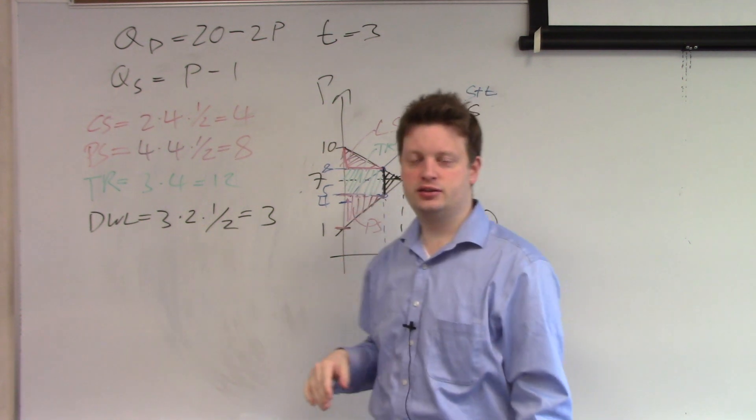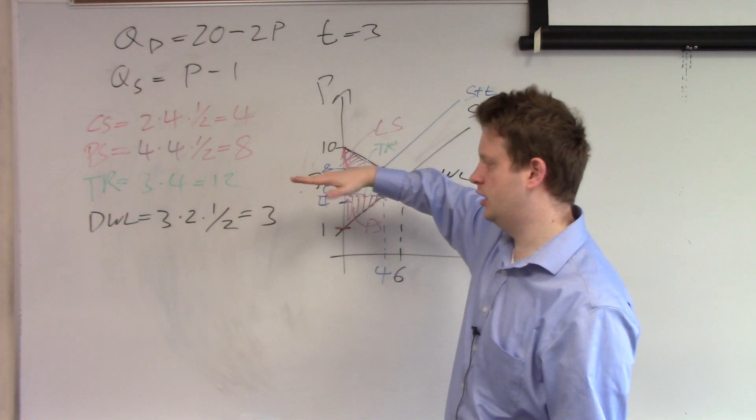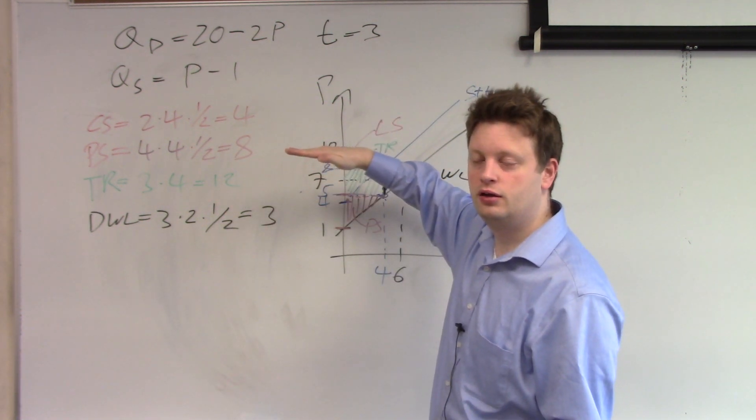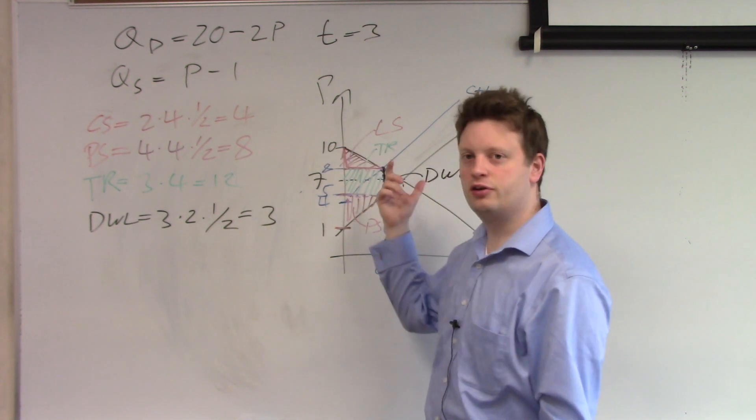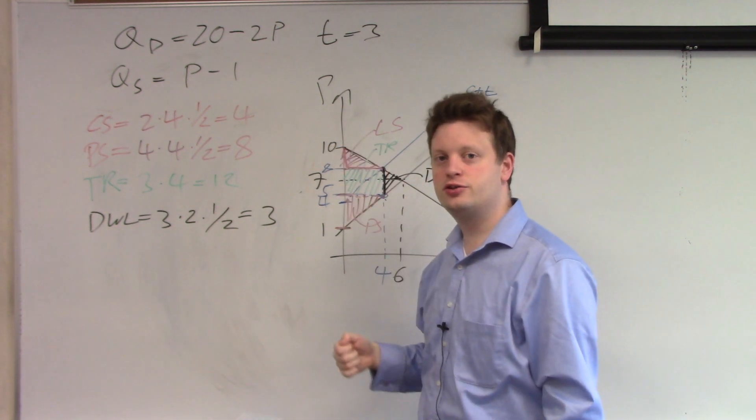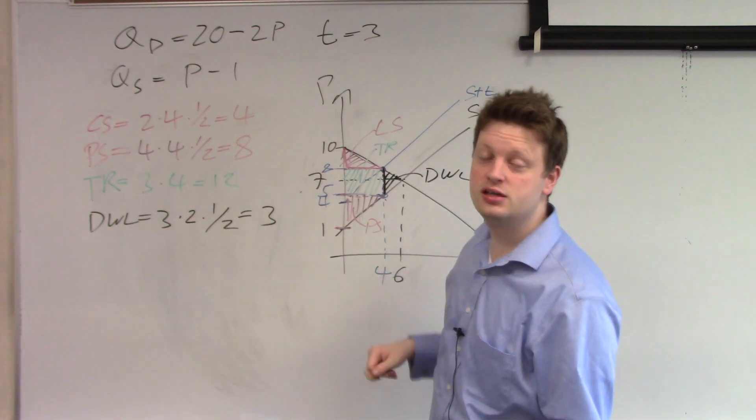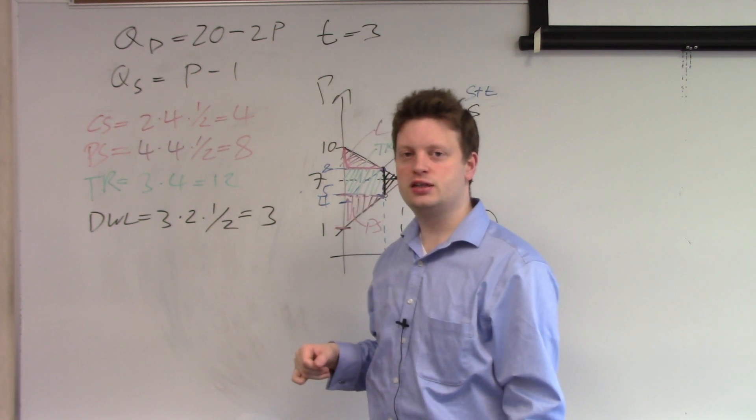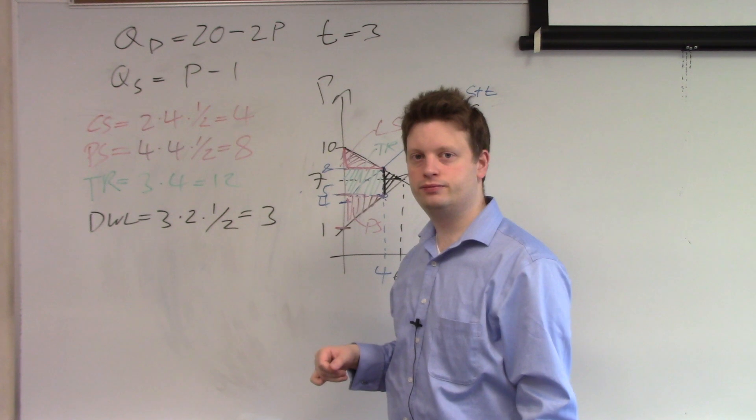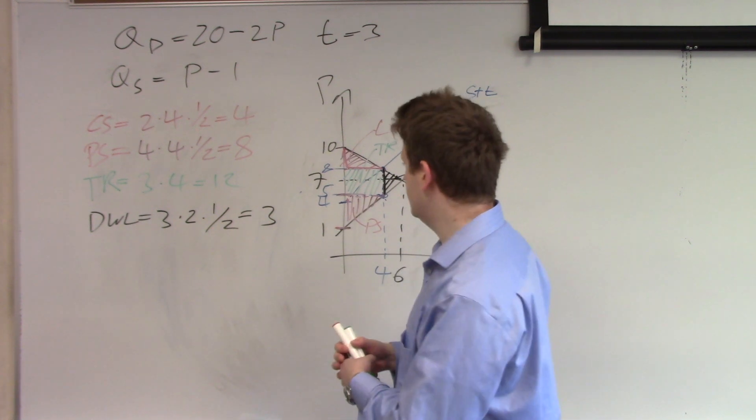If the demand is flatter than the supply, then we will have a main burden of the tax on suppliers. If supply is flatter than demand, then the main burden of the tax is with consumers. So let's check that out.